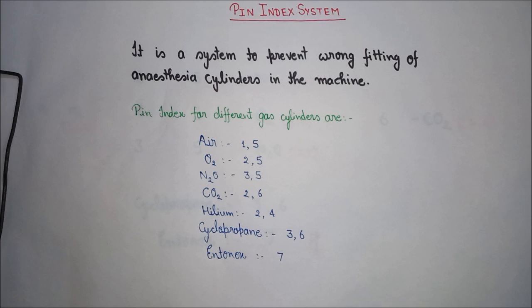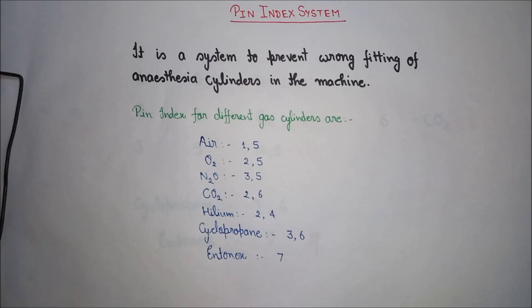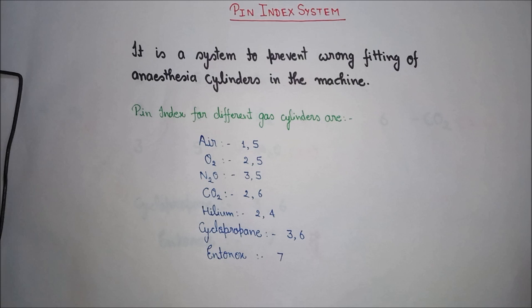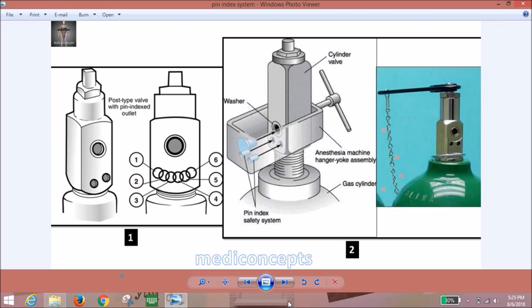Hello everyone. Today we are going to discuss a topic regarding anesthesia — mainly the anesthesia machine. One part of the anesthesia machine is the pin index system. The pin index system is a system to prevent the wrong fitting of anesthesia cylinders in the machine. It involves markings, pins, and holes on the cylinders which prevent them from being fitted in the wrong place.